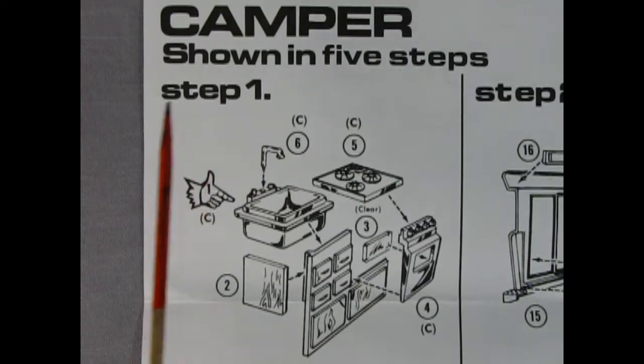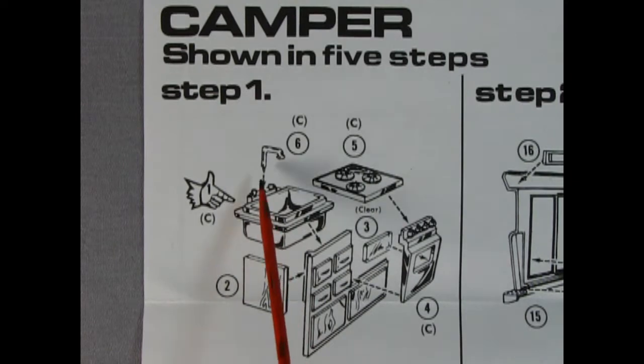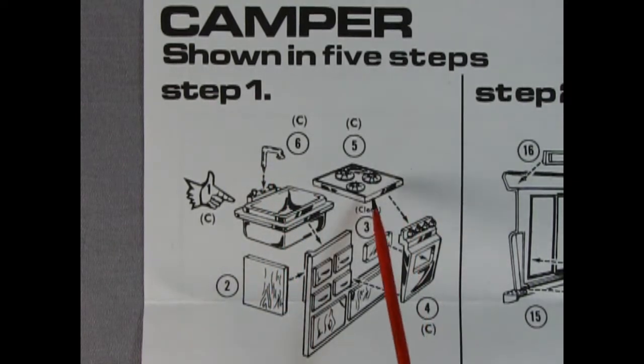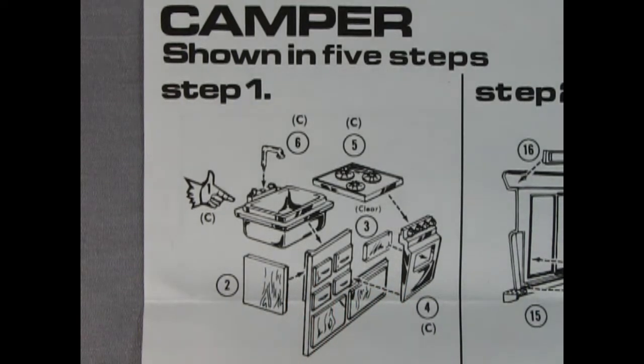So here we have our camper shown in five steps. The first of course is to assemble our kitchen. Now look at this great kitchen sink you get in here with the faucet on the top, the three elements for our stove, the burner up top, and then there's the oven down below. And then we've got all the little silverware drawers and drawers for dishes and other cool things. Really awesome looking.